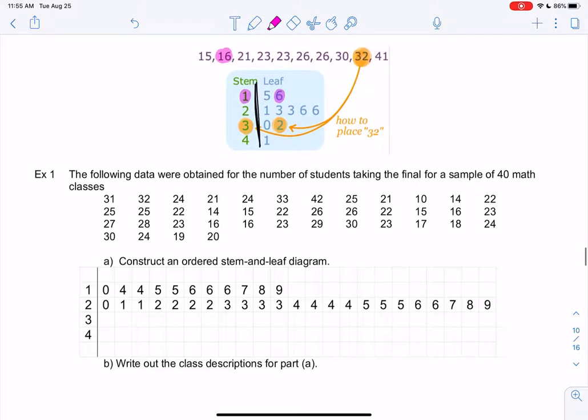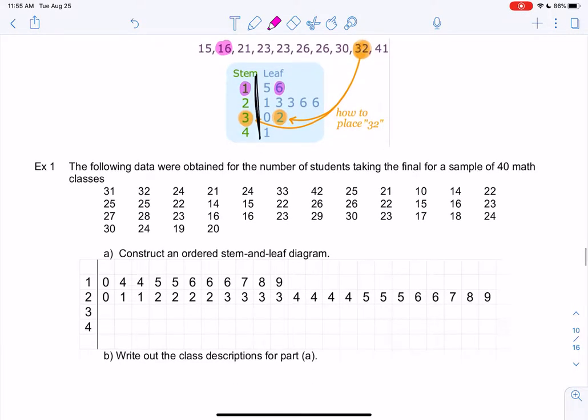So let's just make one and see how we feel about it. I started it just for the first one to save a little bit of time. I already did the 10s and the 20s in this one, but we're looking at 40 math classes and we looked at the number of students taking the final. So one class had 31 students, another class had 32, things like that. So my stems are 10s, 20s, 30s, and 40s, and then the second digit goes on the right.